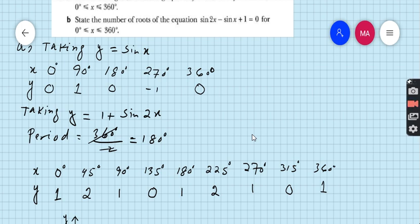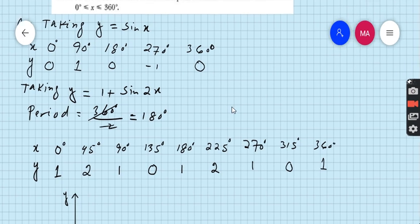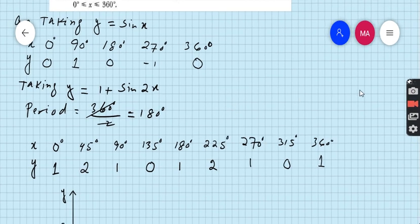So take 45 degrees. When we put 0 in the equation, 1 plus sin 2 times 0 is 1. Then 1 plus sin 2 times 45 is 2. Then 1 plus sin 2 times 90 is 1. Use scientific calculator to get the values.